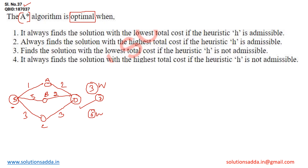An optimal result is always the one in which we get the minimum cost — cost in terms of space as well as time. On an optimal result we will always get the minimum space and time. Optimization basically means solving a problem in the minimum number of steps, minimum cost, time, and space.